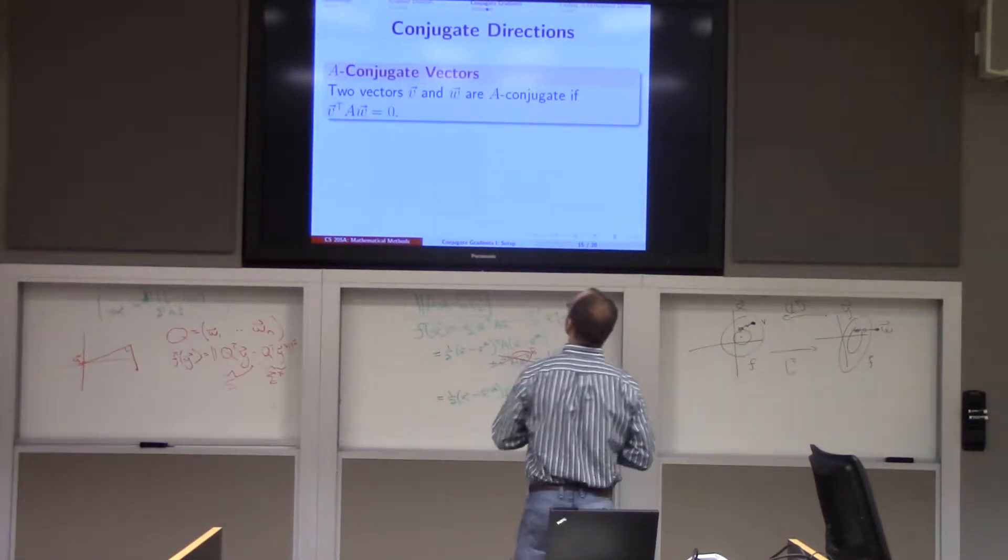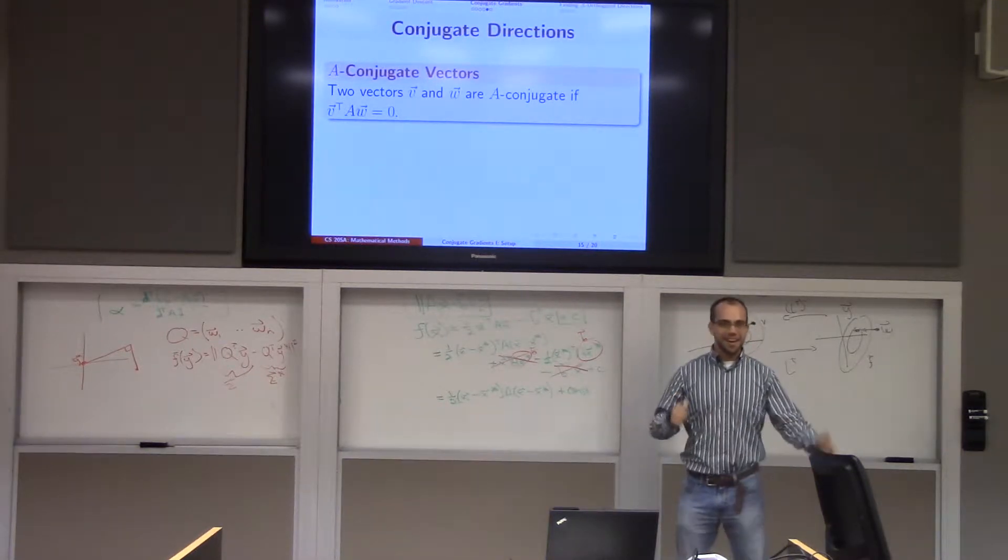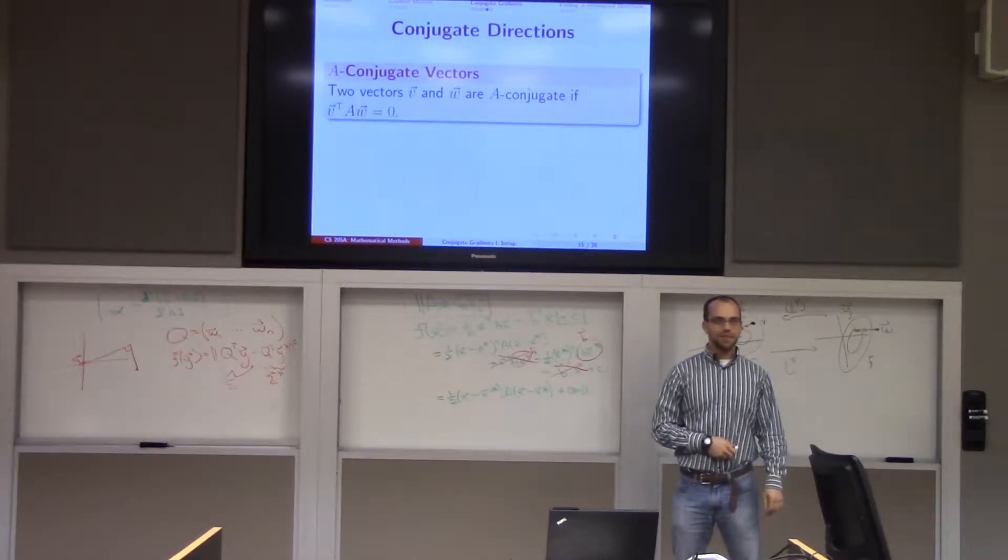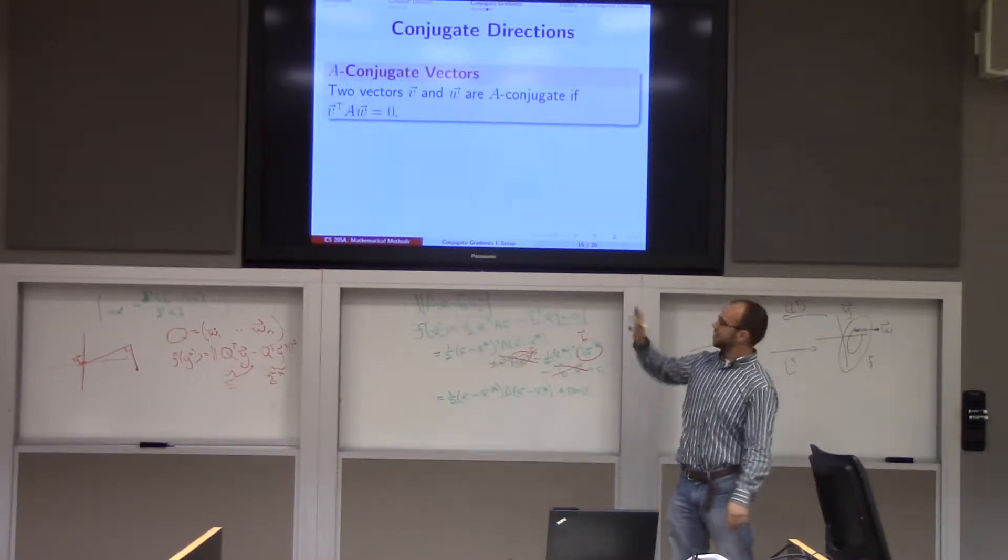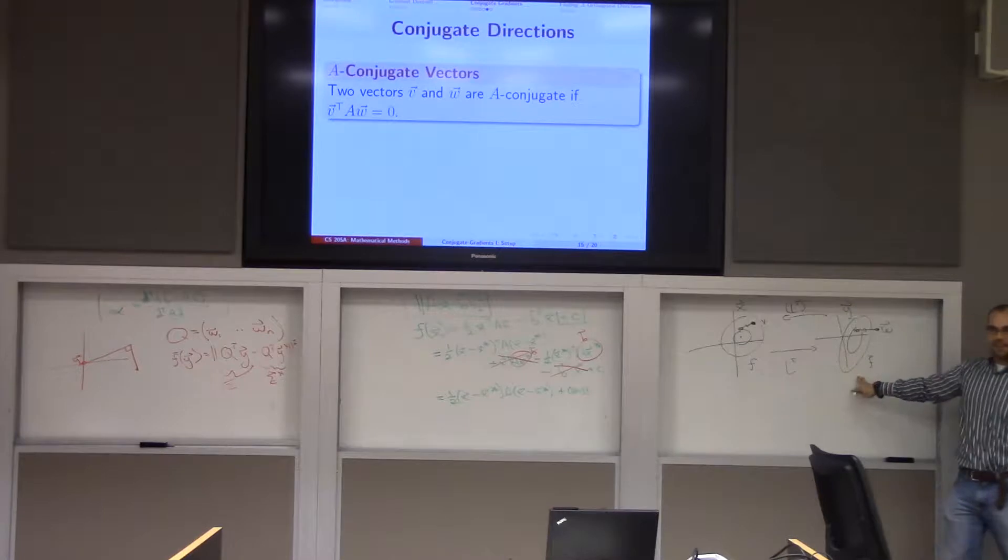So we're going to say that two vectors V and W are A-conjugate if V transpose times A times W equals zero. In other words, secretly, if I had Cholesky factorized A, I could get to two orthogonal search directions on this f-bar. Hopefully that parses.